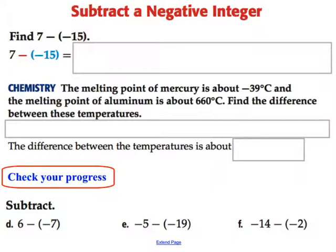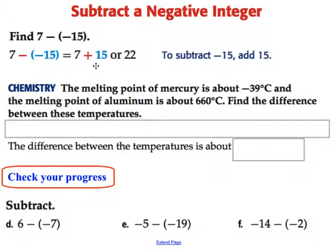Subtracting a negative integer. When we have a subtraction of a negative integer, we have a double negative here. So 7 minus a negative 15. And you know that when we have a double negative, that turns into a positive. So that's 7 plus 15, which gives us a total of 22.